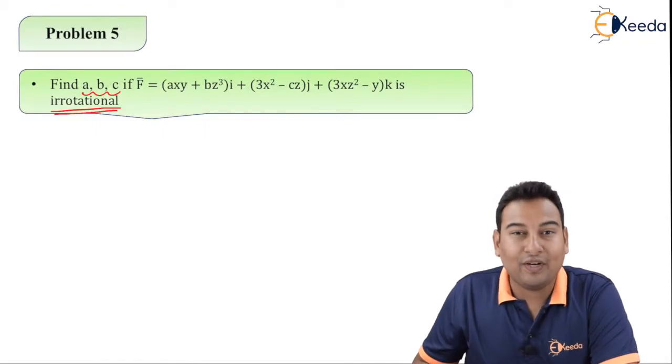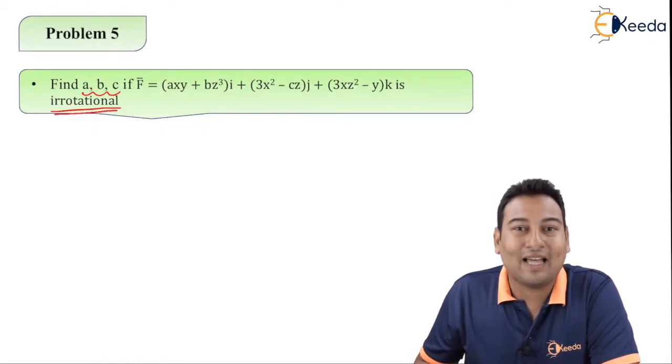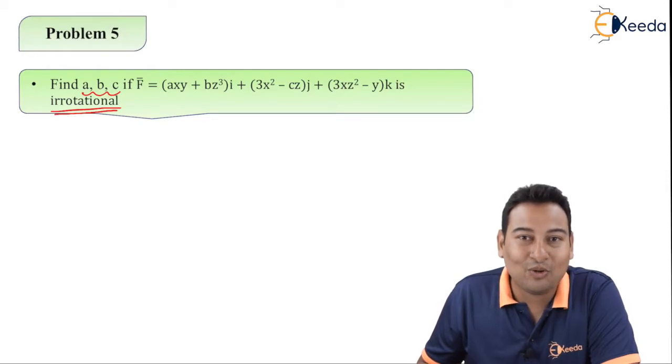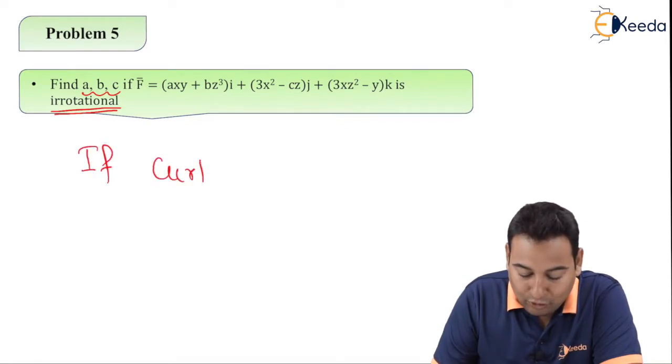In the last video we discussed when the vector is solenoidal. If divergence of F bar equals 0, vector is solenoidal. And if curl of F bar equals 0, vector is irrotational.